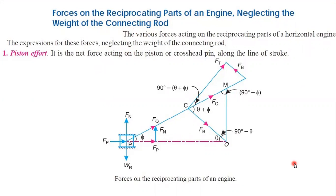In this entire topic we are going to calculate and understand what kinds of forces act on the reciprocating part, just by neglecting the weight of the connecting rod. So the first force is piston effort. Piston effort is nothing but the net force acting on the piston or cross head pin along the line of stroke. Fp is the piston force acting along the line of force.